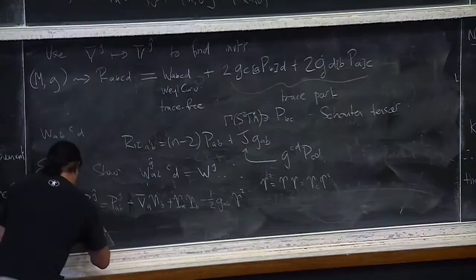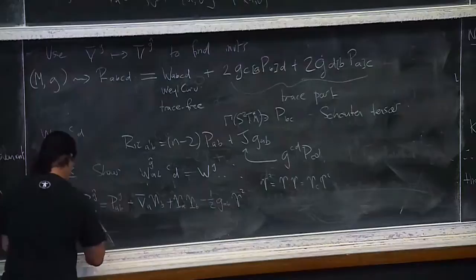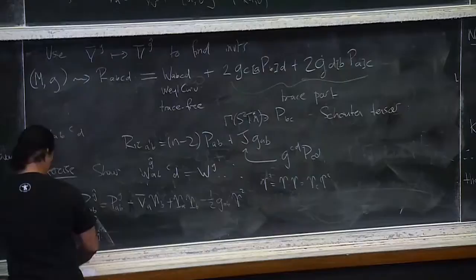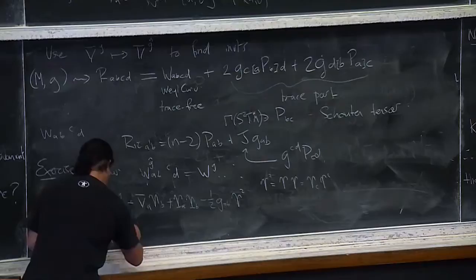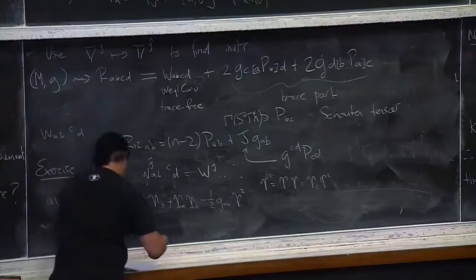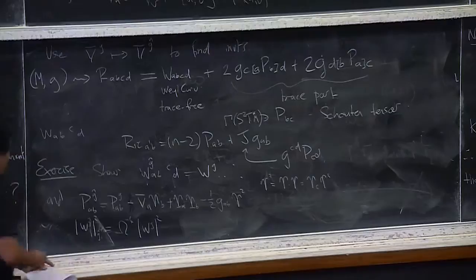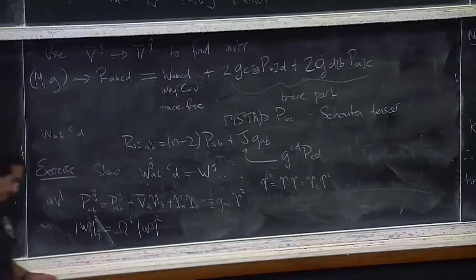Right away you can see you can make some conformal invariants quite easily, because the Weyl curvature itself is conformally invariant. If you want to make a scalar one, you can just take the squared length of the Weyl curvature: |W|^2 contracts everything using the metric. This gives a conformal covariant of weight minus four.